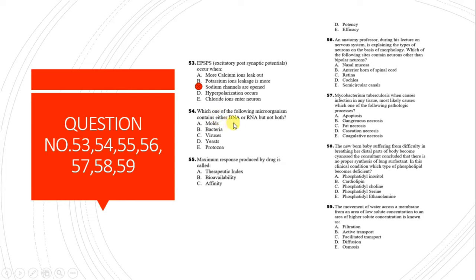Question 54: Which microorganism contains either DNA or RNA but not both? The answer is viruses. Viruses contain either DNA or RNA and cannot contain both at a time.